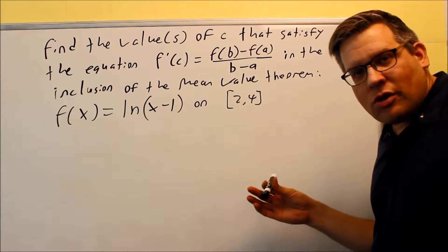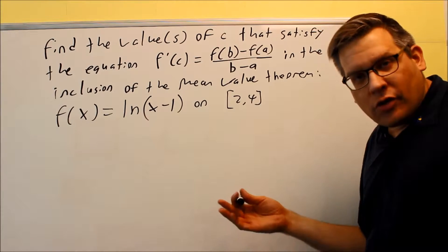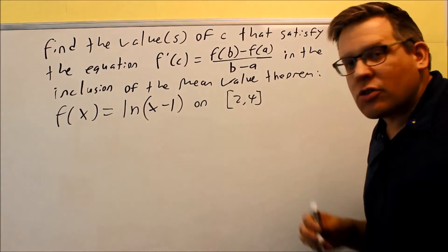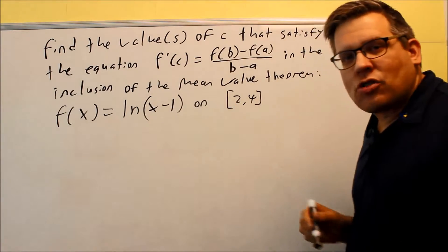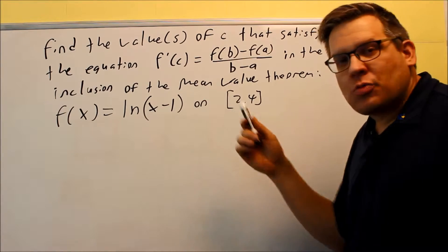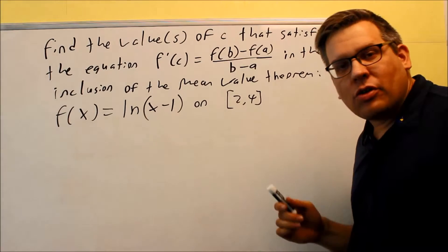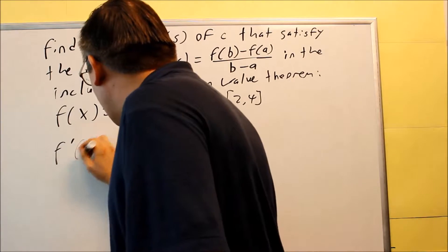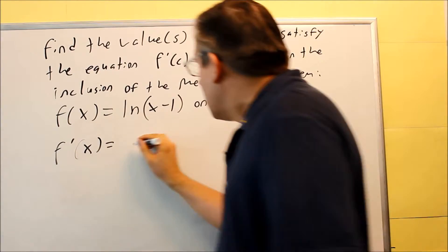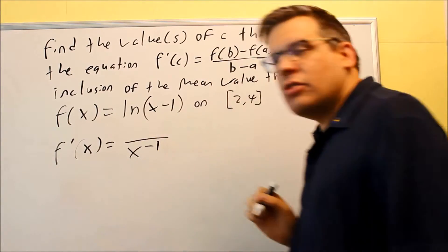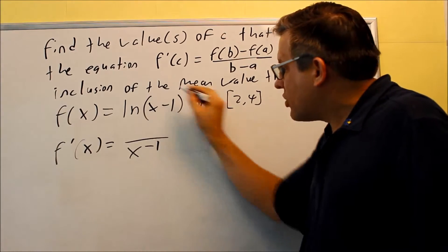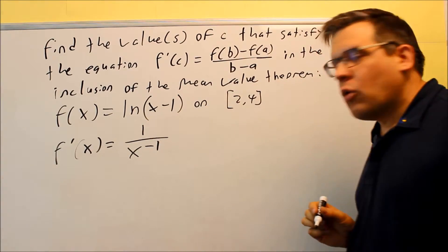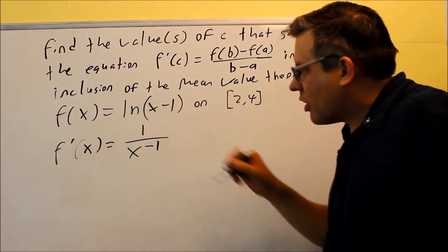Now we have to see if the derivative is continuous on the open interval from 2 to 4. So let's take the derivative. Because I have a natural log here, I have to use my formula u' over u. The u in this case is the inside thing, x minus 1. So f'(x) has u in the bottom. On top, I take the derivative of u, which gives us 1.